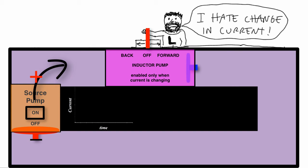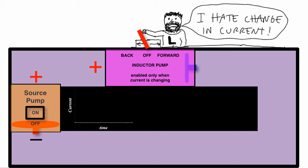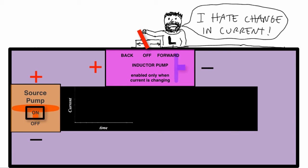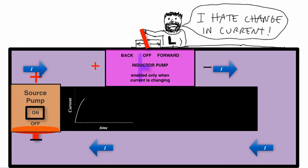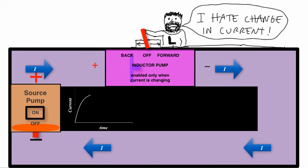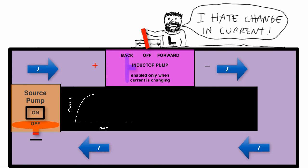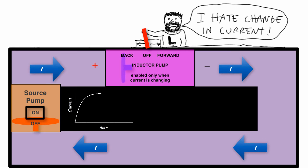But this guy says no, I don't want the current to change. So what he does is he turns his inductor pump on so it opposes it — there's high pressure on this side and low pressure on this side. So for that first instant, he actually prevents any current from flowing. He's fueled by any changes in current. But soon the source pump starts winning and the current starts to get higher and higher through here. However, the rate of change of current starts to decrease and his pump starts getting weaker and weaker.